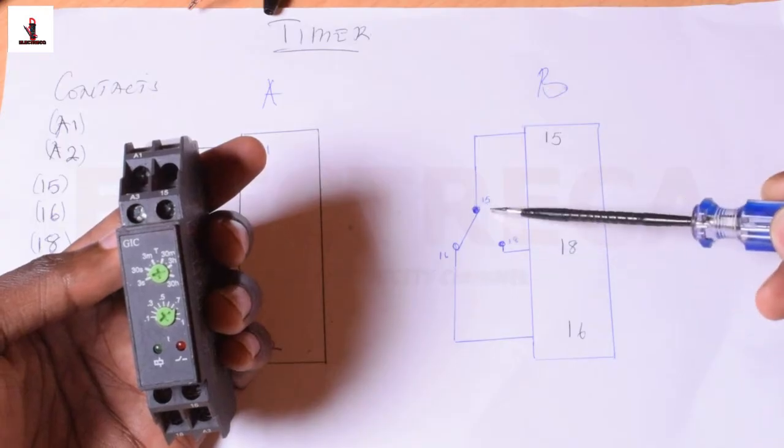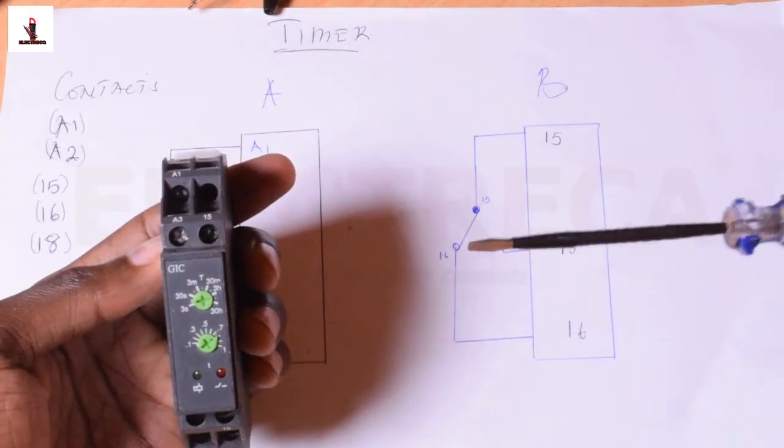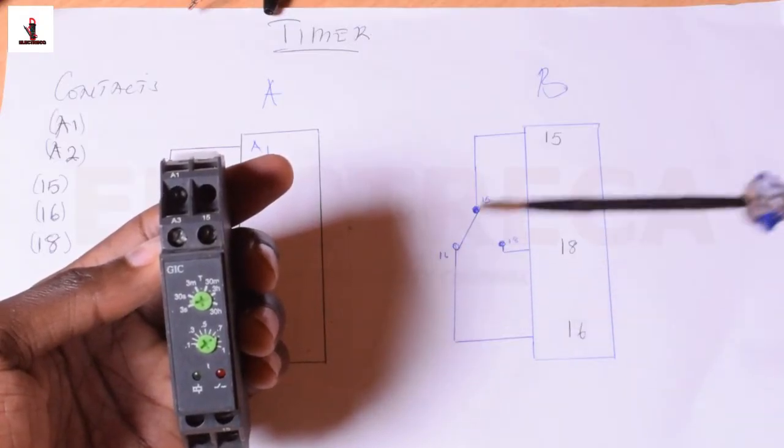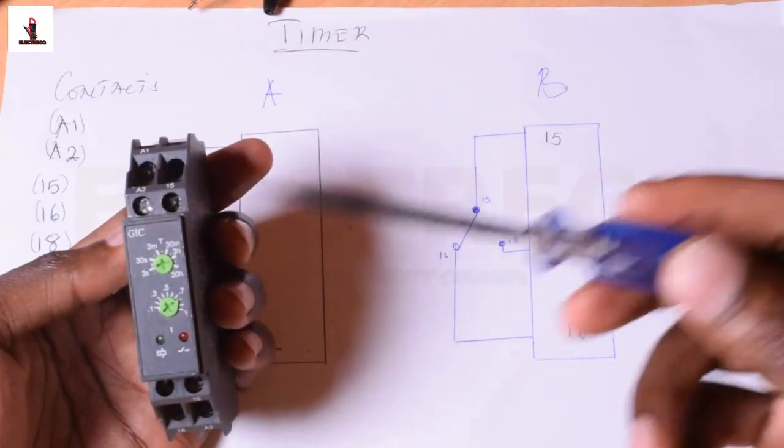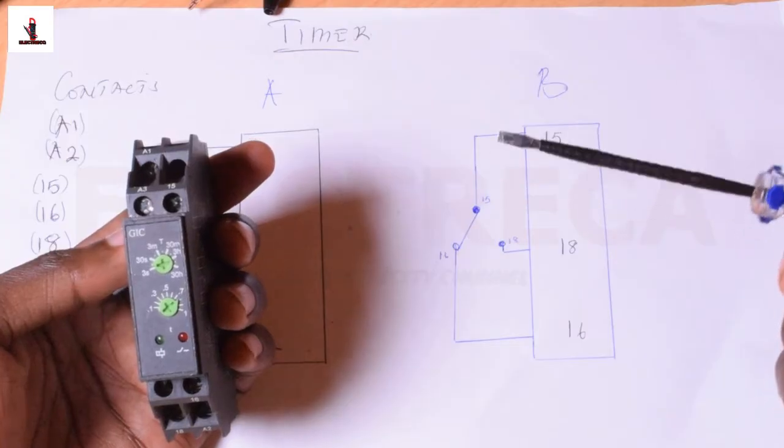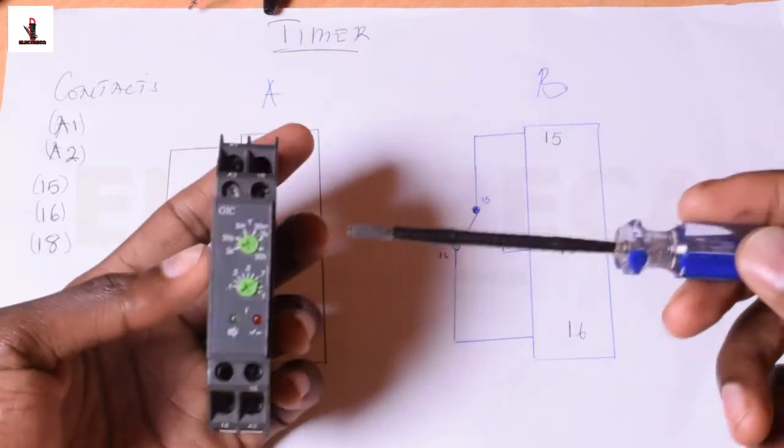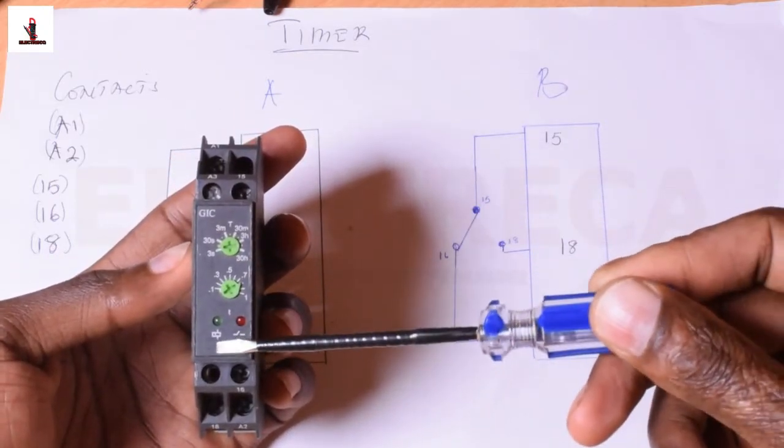Then if you look here, you see that 15 is common, 16 is normally closed to common, and 18 is open. So it really depends on what you want to use your timer for. Now, let me show you first: this timer has got two lights here.